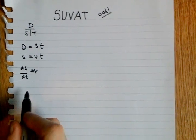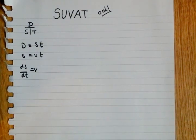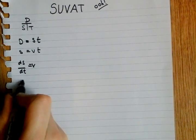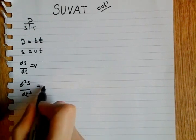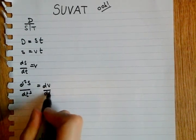Now, if we differentiate both sides with respect to T again, we get d²S over dT² is equal to dV over dT.